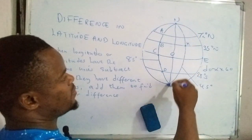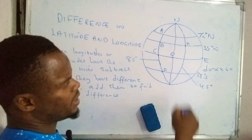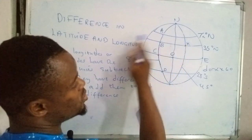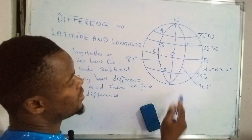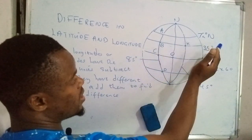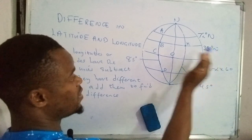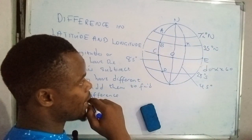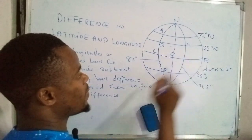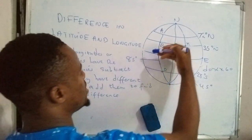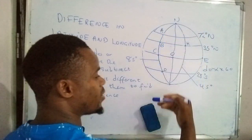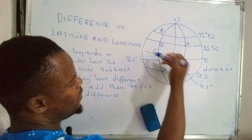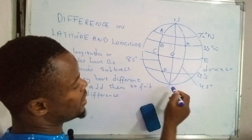This is the prime meridian, or the Greenwich meridian, which separates the earth into two equal halves. The eastern hemisphere is on one side and the western hemisphere on the other. The equator separates the earth into the northern and southern hemispheres.